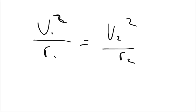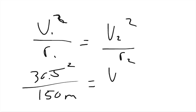And so we just plug in our values. The first curve was 30.5 squared over the radius of 150 meters, and that has to equal V2 squared over the radius of 85.5 meters.